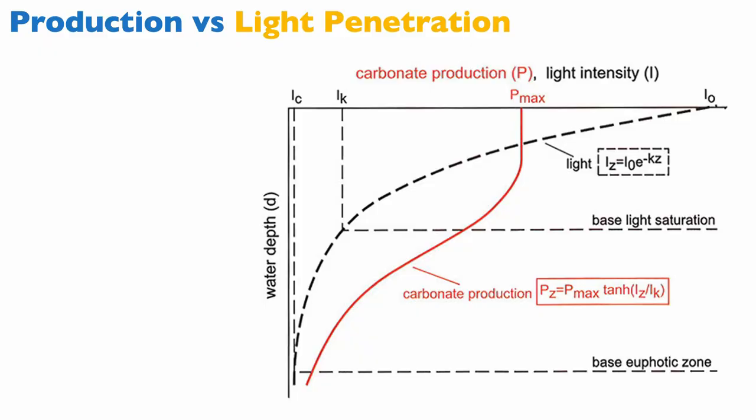Here's a theoretical graph that shows on the horizontal axis light intensity and carbonate production. Light intensity is the dashed black line and the red line is carbonate production. The vertical axis is depth. Notice that all of these do not have scale, it's a scaleless conceptual diagram.